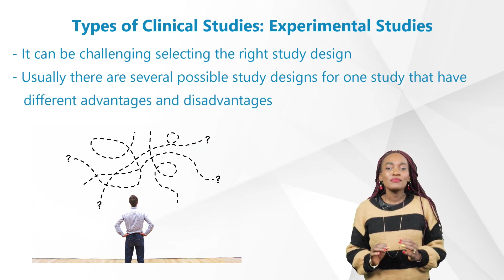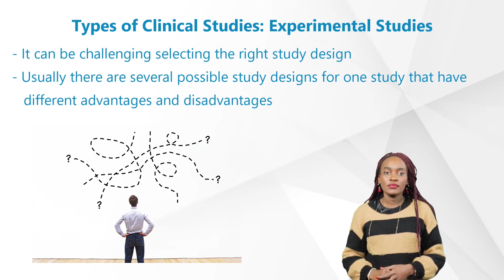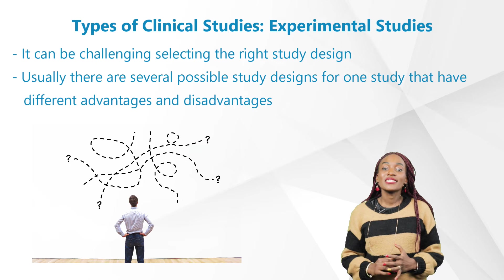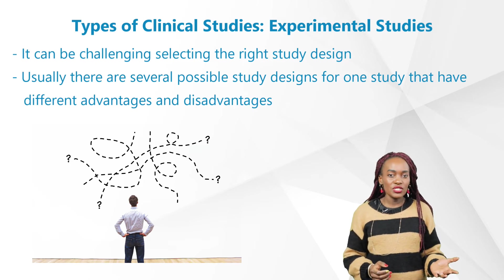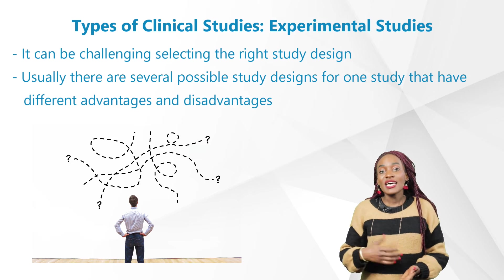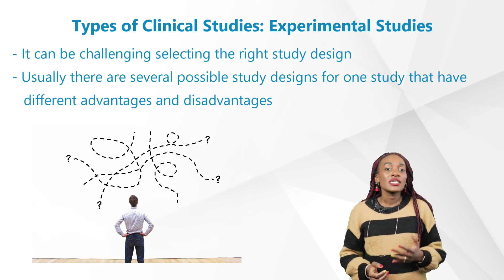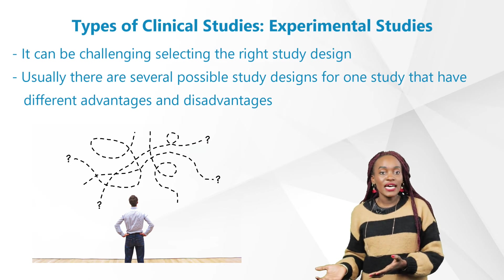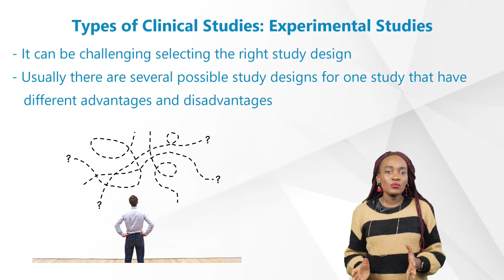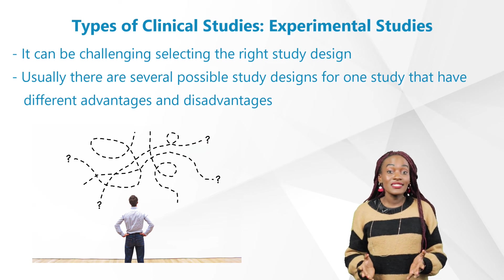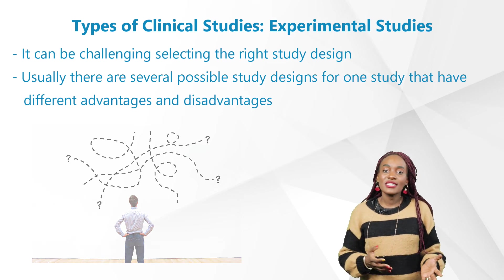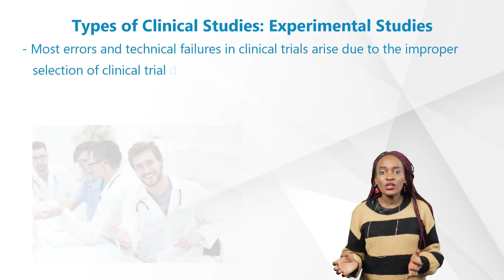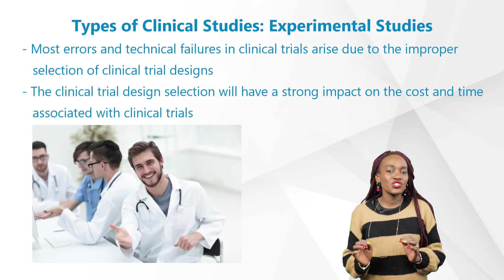Several things should be considered when designing a clinical study plan, such as defining the appropriate research questions or objectives, the type of randomization design, type of blinding design, the sample size, and the number of sites. Usually there are several possible study designs for one study, each with different advantages and disadvantages. What you do not want is a bad trial design.